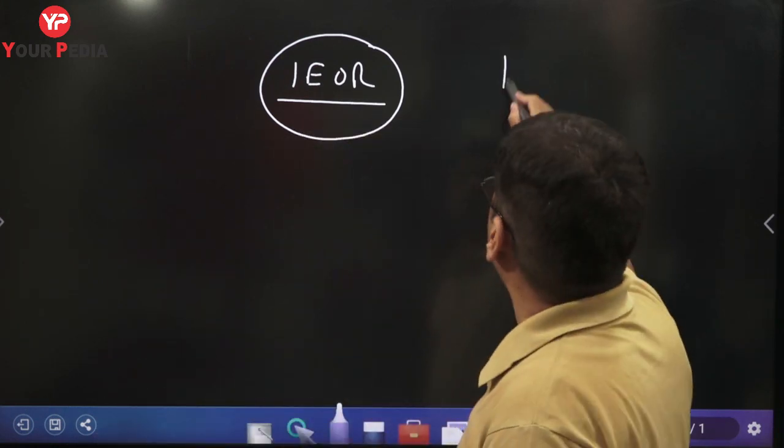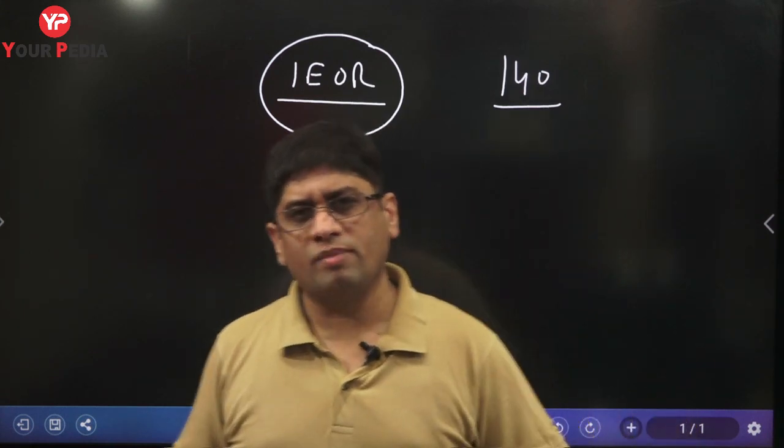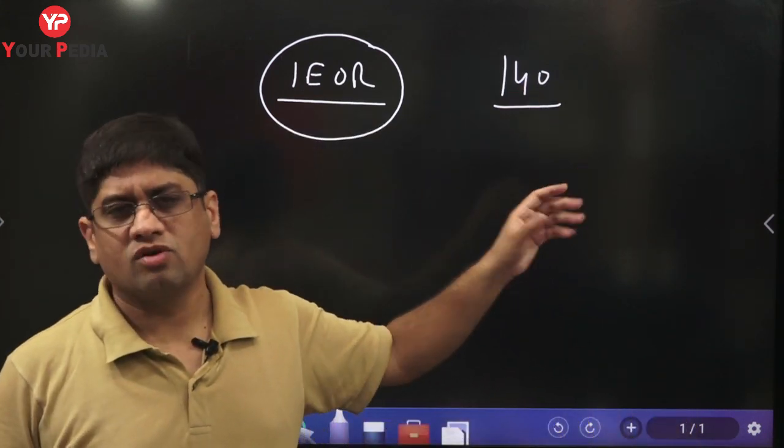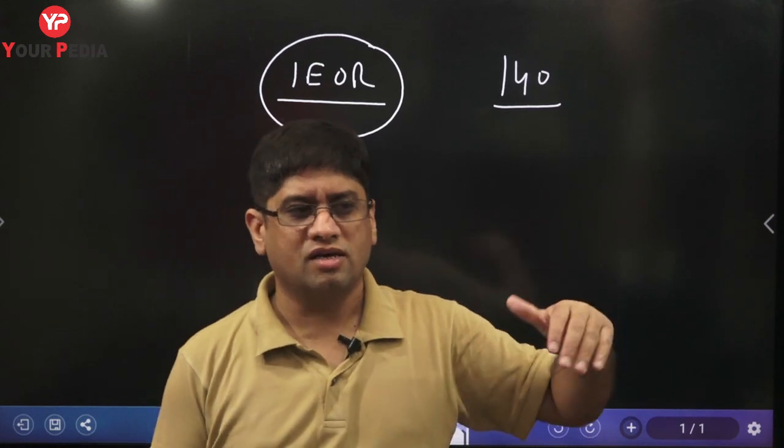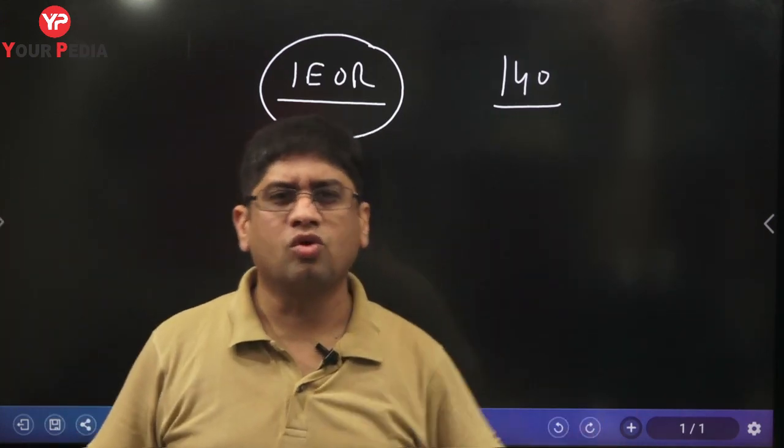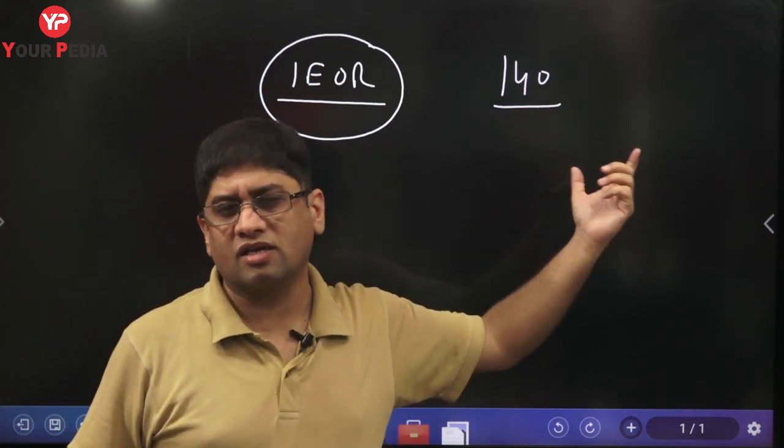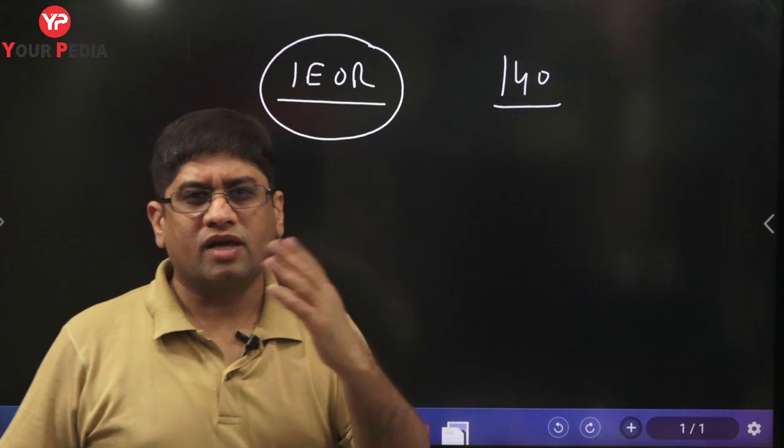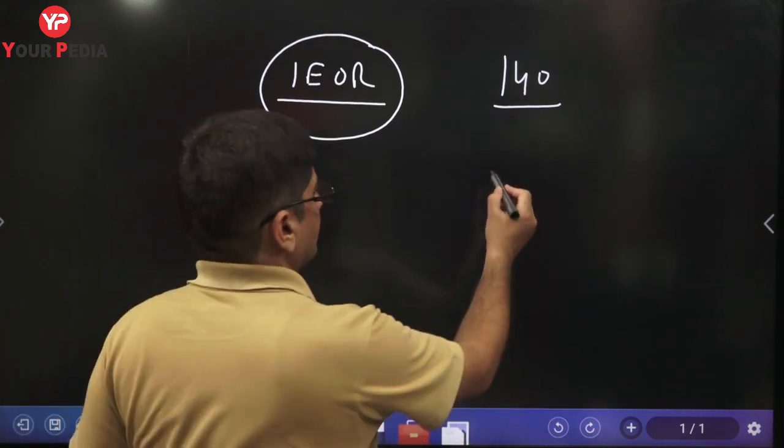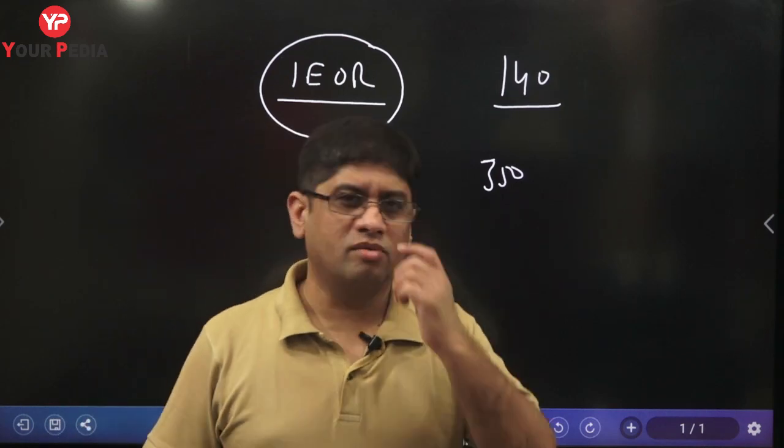Unless you crack the written exam and interview, you cannot get selected. But the point is at least we have got a call. Think of a student with 140 GATE score in basic sciences. If at this score you're getting a call throughout all categories, for SC category in basic sciences, general category in mechanical engineering at 350 also from core branches in PhD.